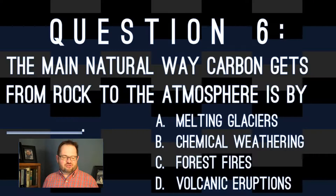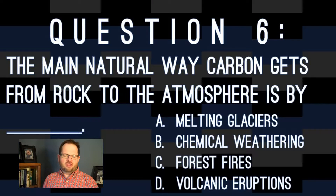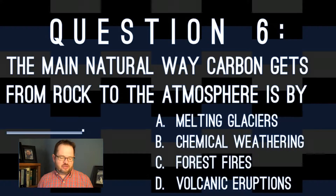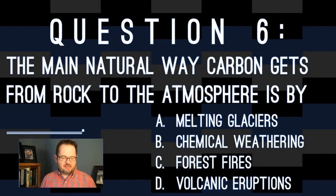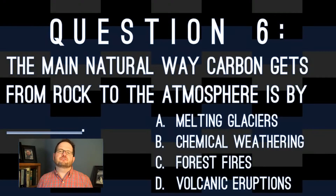Okay, we're almost done with this lecture. Question six: The main actual way carbon gets from rock to the atmosphere is by melting glaciers, chemical weathering, forest fires, or volcanic eruptions.